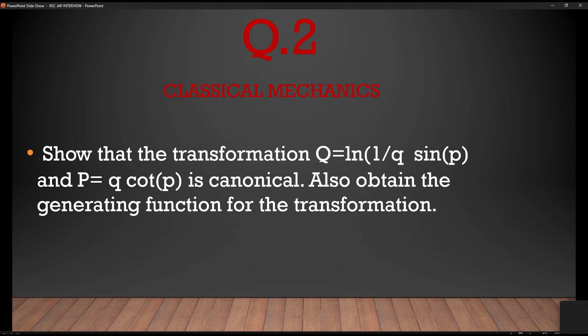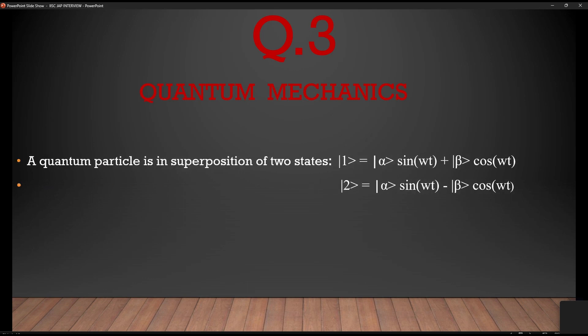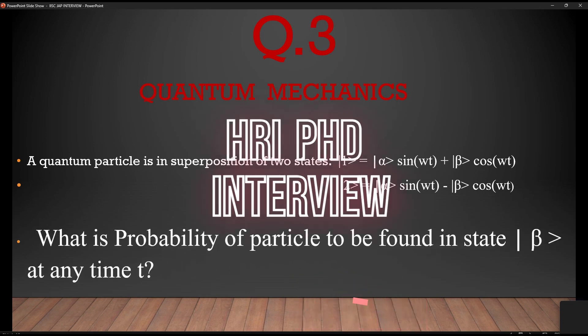Question 3 was from quantum mechanics. I don't remember the question exactly, but it was something like: a quantum particle is in a superposition of two states — state 1 equals alpha·sin(ωt) plus beta·cos(ωt), and state 2 equals alpha·sin(ωt) minus beta·cos(ωt). What is the probability of the particle being found in state beta at any time t?